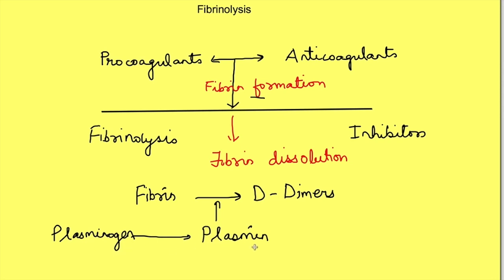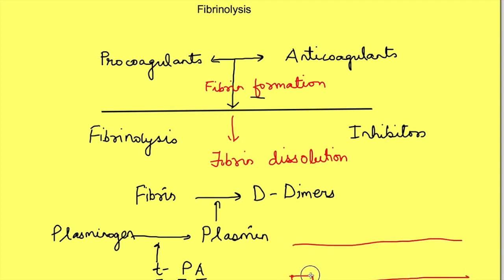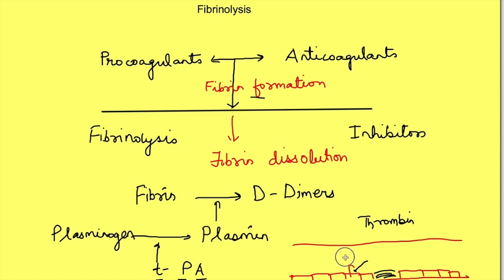Plasminogen activation at the site of clot formation occurs by tissue plasminogen activators, or tPA. These tissue plasminogen activators are released from endothelial cells of the vessels. Interestingly, thrombin — which was crucial in the formation of the fibrin meshwork at the site of vessel injury — also triggers the release of tPA from endothelial cells. So at the site of vessel injury, tPA is released, plasmin is formed, and this breaks down the fibrin meshwork to D-dimers.